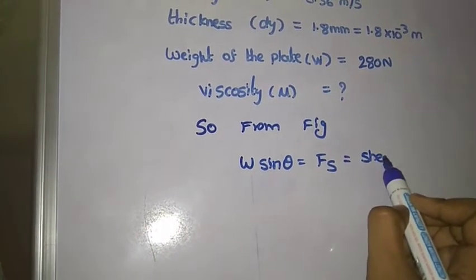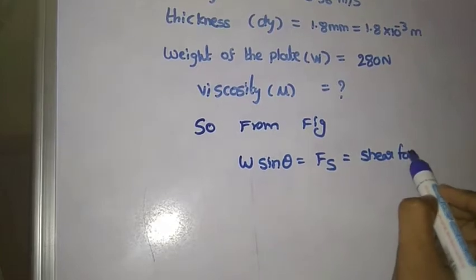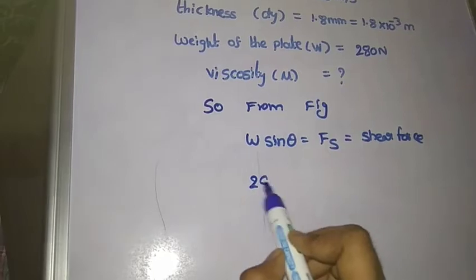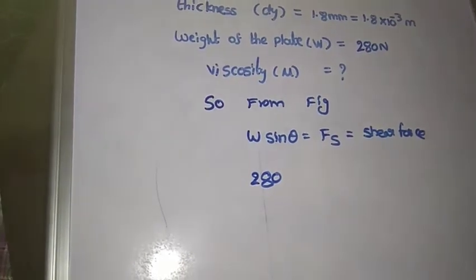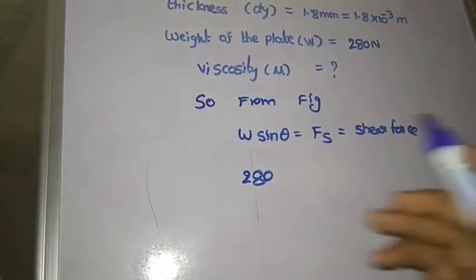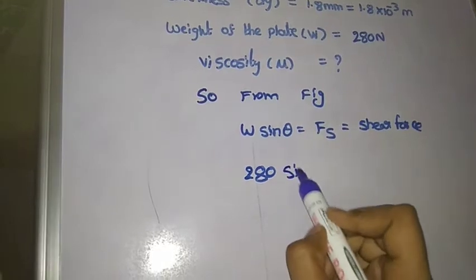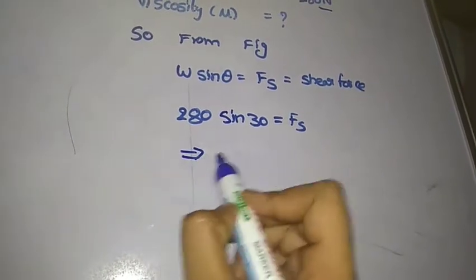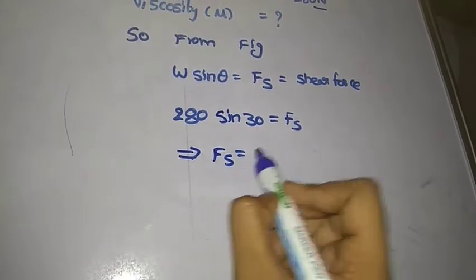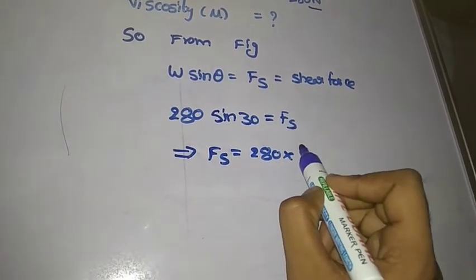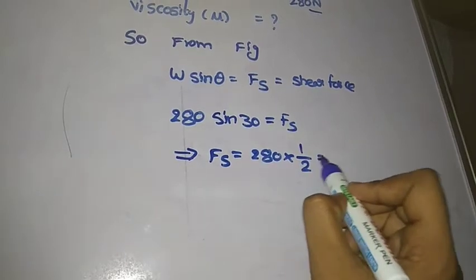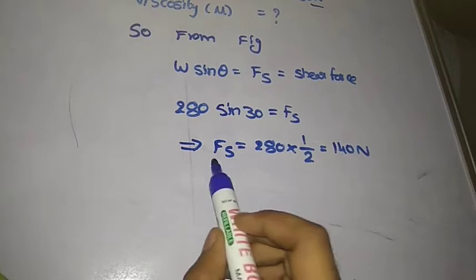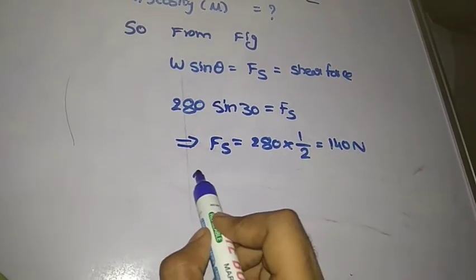W sin θ = Fs, where weight is 280 N and sin 30° = 1/2. Therefore, Fs = 280 × 1/2 = 140 N is the shear force value.